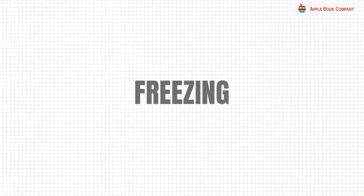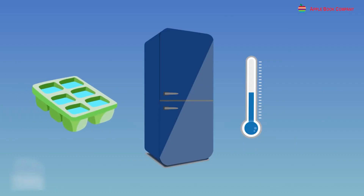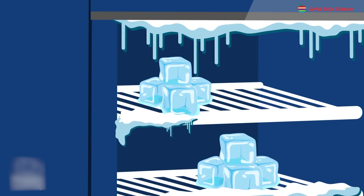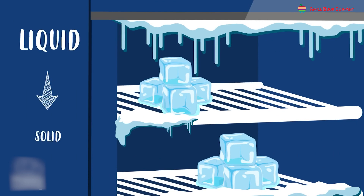Freezing. On cooling, a liquid freezes into a solid. The process by which a liquid changes into its solid state on cooling is known as freezing. When water is kept in a freezer, it turns into ice. It happens because on cooling, the molecules of a liquid attract each other more and become tightly packed, making the liquid change to its solid form.